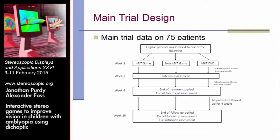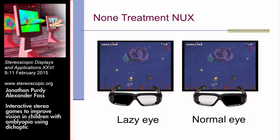The next trial involved 75 patients — this is new data, not yet published anywhere, though we hope it will be in the literature within the next year. The main trial had 25 patients in each of three groups: an IBIT game treatment group, a non-IBIT game treatment group, and an IBIT DVD group.